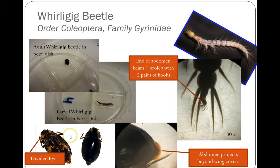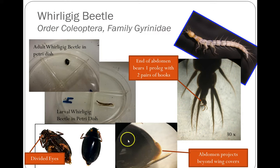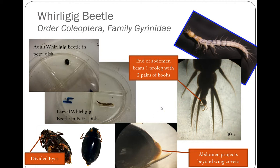For the adult Whirligig beetle, the best way to identify them is their divided eyes — eyes on the bottom of their head and eyes on the top of their head. When they skate around on the surface they can see below and above them at the same time. Another good identifier is that their abdomen projects beyond their wing covers just a little bit. Those are good characteristics to identify the Whirligig beetle.